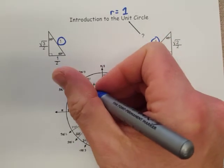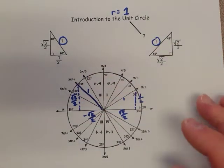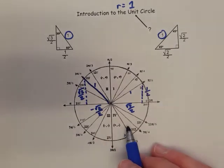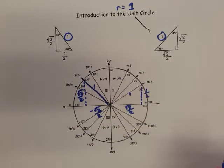But the hypotenuse here would still be one. And no matter where you go around the circle, no matter which one you put in there, the radius or the hypotenuse is always going to be equal to one. And so that is going to be a real advantage to us.